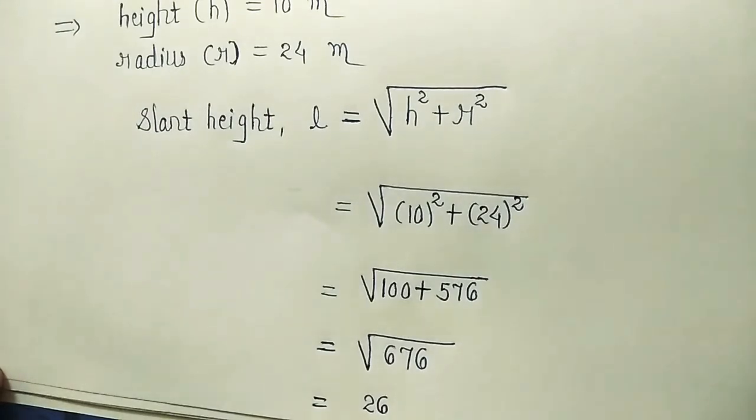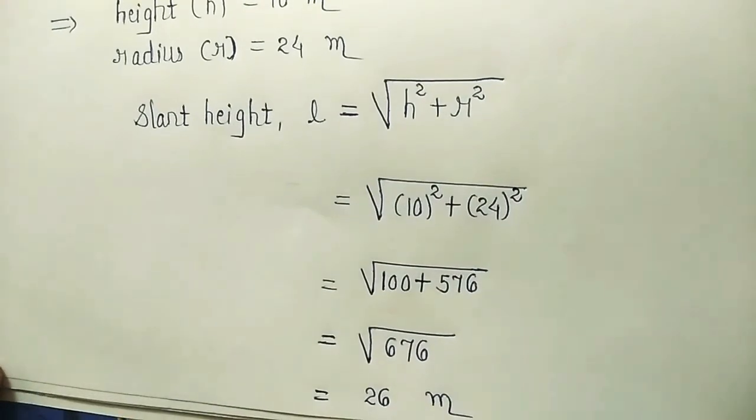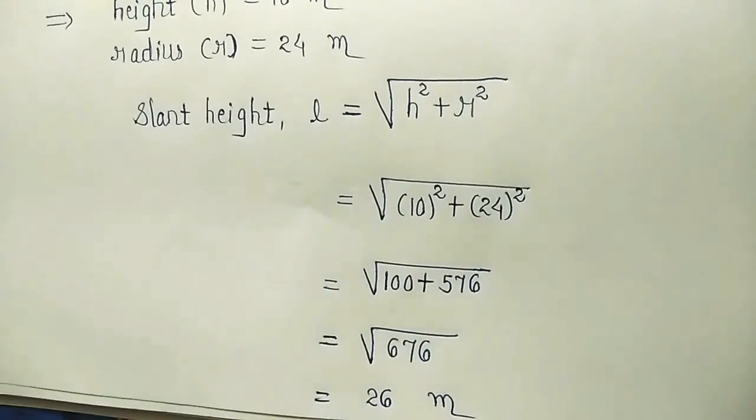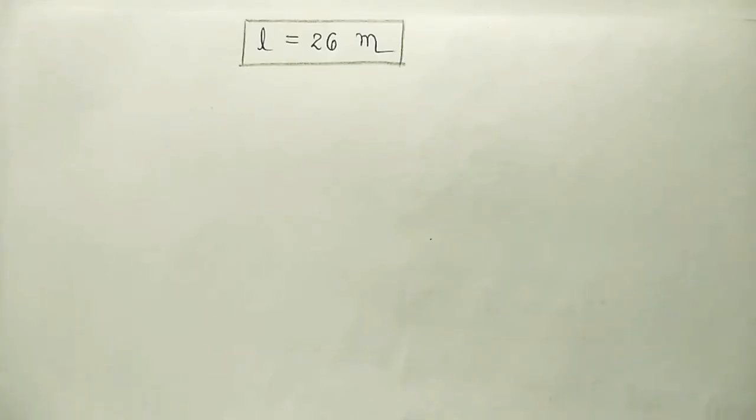So square root of 676 is 26. This is slant height. It will be in which unit? Meter. If you do not remember the squares or square roots, square roots you can find by prime factorization method also. So slant height L we got as 26 meter.